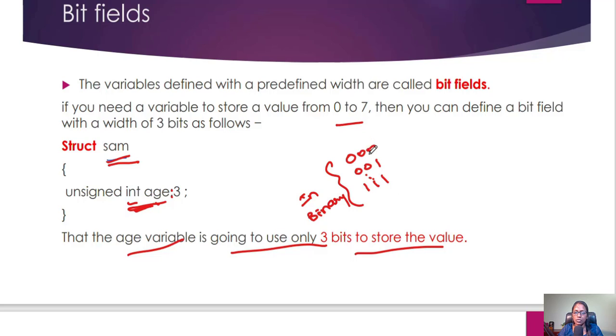I can enter values from 0, then 01, then 010 which is 2, and so on, up to 7. Using 3 bits, I can enter values from 0 to 7 only. The age variable is going to use only 3 bits to store the value.